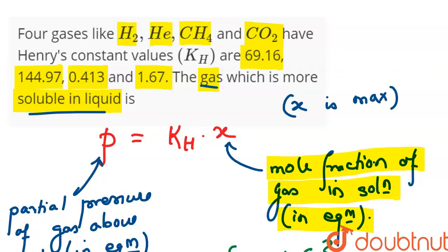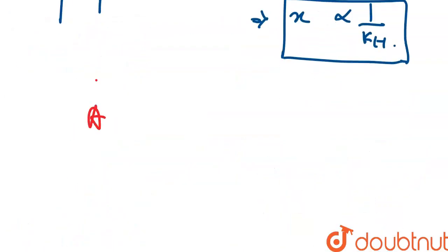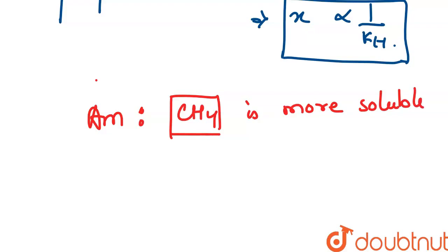Now, if X is maximum, then KH's value is minimum. In gases, we can see the minimum value is 0.413, and 0.413 kis ka hai? Methane ka hai. So, our answer is CH4, or methane, is most more soluble in liquid.